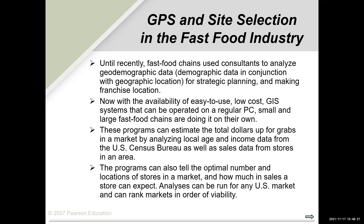GIS and site selection are also used in the fast food industry. Until recently, fast food chains used consultants to analyze demographic data for strategic planning and franchise location decisions. Now, with availability of easy-to-use, low-cost GIS systems on a regular PC, small and large fast food chains are doing these analyses on their own without paying consultants. These programs can estimate total dollar volume for a market by analyzing local age and income data from the U.S. Census Bureau, as well as sales data from stores in the area. Programs can also identify the optimal number and locations of stores and expected sales.